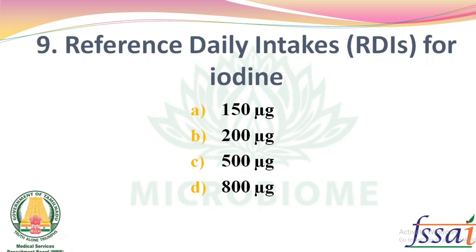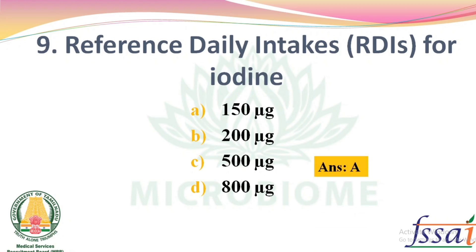Reference Daily Intakes for Iodine — Options: 150 mg, 200, 500, 800. The right answer: Option A, 150 mg.